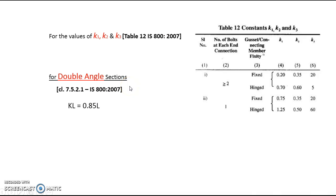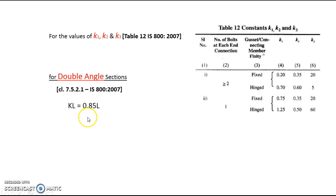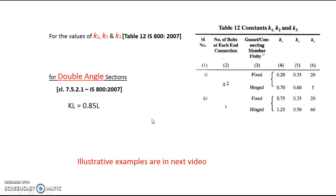For double angle sections, the previous formulas are used. However, whether the double angles are on opposite sides or the same side of the gusset plate, the effective length is taken as 0.85 × L (i.e., k = 0.85), as per Clause 7.5.2.1. We will see an illustrative example in the next video. Thank you.